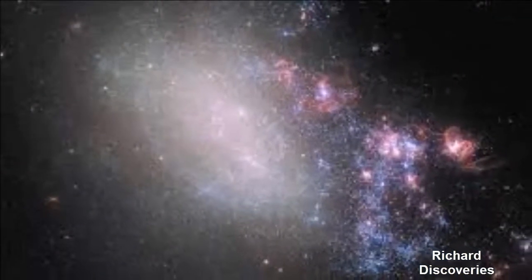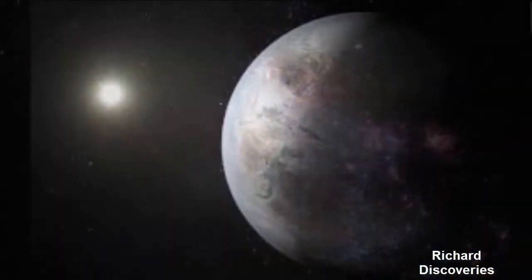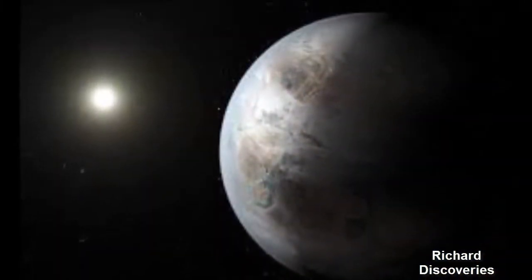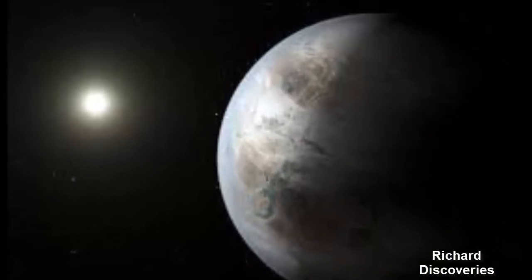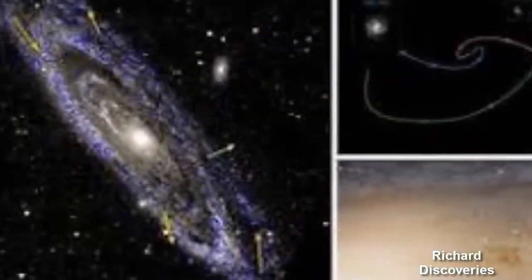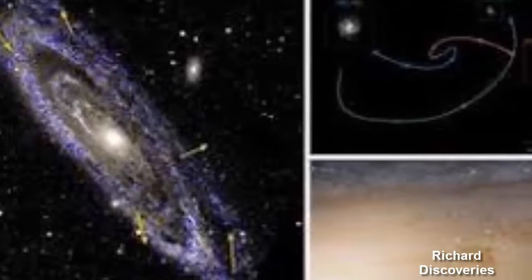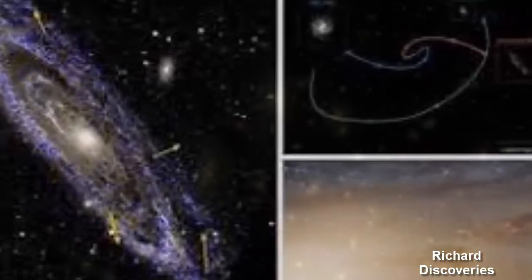He added: "We hope to re-observe the star again in the future to verify or reject the exomoon hypothesis. And if validated, the planet-moon system, a Jupiter with a Neptune-sized moon, would be a remarkable system."